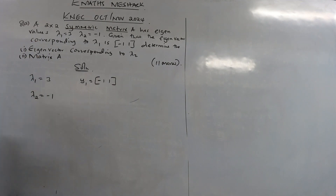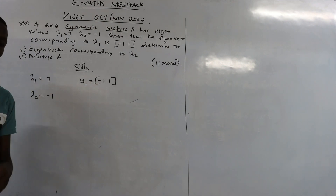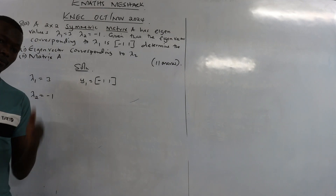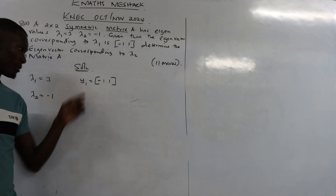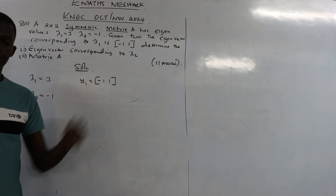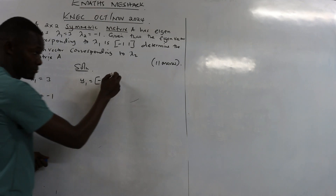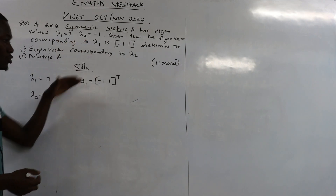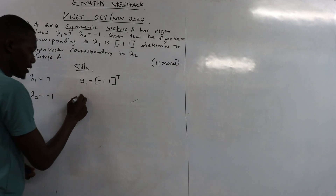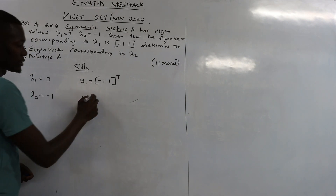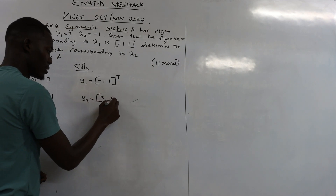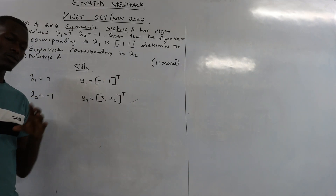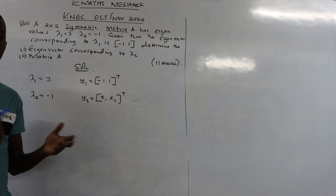Now, eigenvectors are always given as column vectors with only one column. But this one has been given in terms of a row matrix, so it may sometimes have a transpose symbol T, meaning the column has been written as a row. Our y2 is what we don't have, so I'll write it as (x1, x2) transposed. The T may or may not be shown, but the meaning is the same.